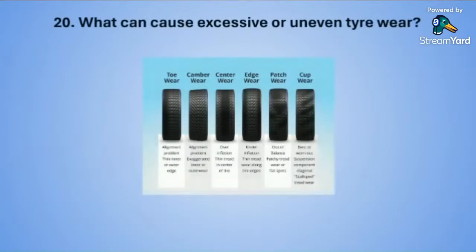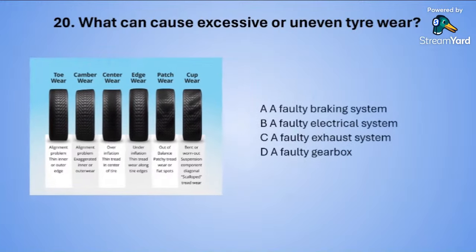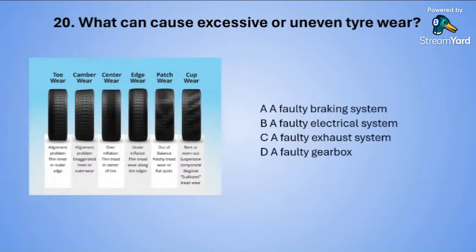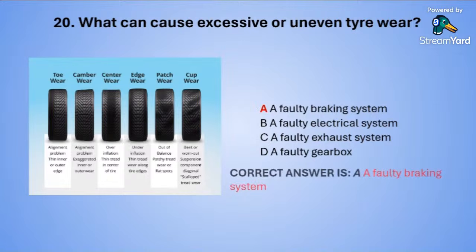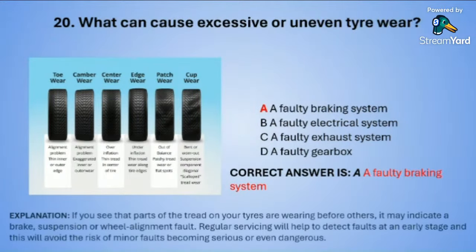Question twenty: What can cause excessive or uneven tyre wear? A: a faulty braking system. B: a faulty electrical system. C: a faulty exhaust system. Or D: a faulty gearbox. The correct answer is A — a faulty braking system.